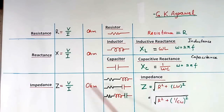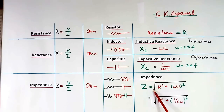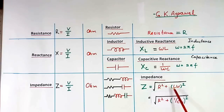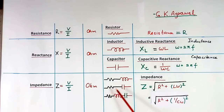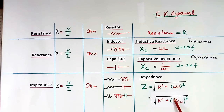In case of impedance, if R and L are there, then impedance value will be square root of R squared plus (L omega) squared. If R and C are there, then impedance value will be square root of R squared plus (1 by C omega) squared.